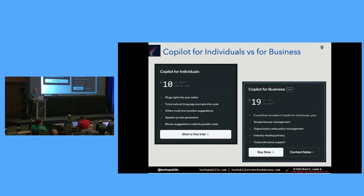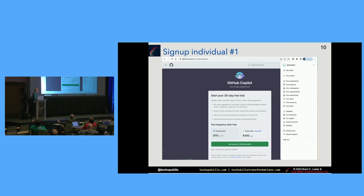Copilot's pricing: for individuals it's $10 a month. There's Copilot for Business at $19 a month per user, which buys you things like license management, policy management, and enterprise-level control of licenses and policies. If you want to sign up and try it out, you can go into your GitHub settings and say 'try Copilot.' It's free in certain instances — GitHub has a student program and teacher program — but in general it's going to be $10 a month.